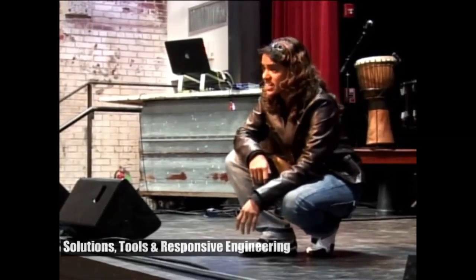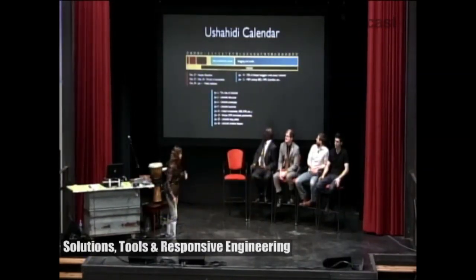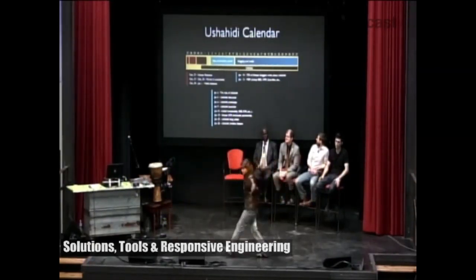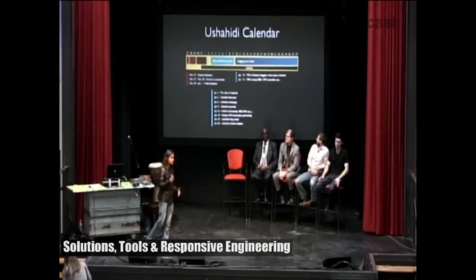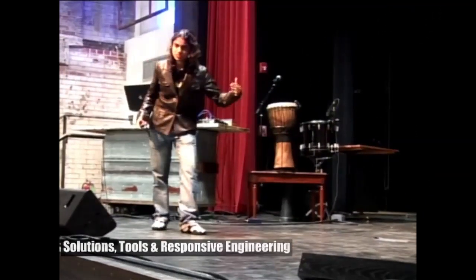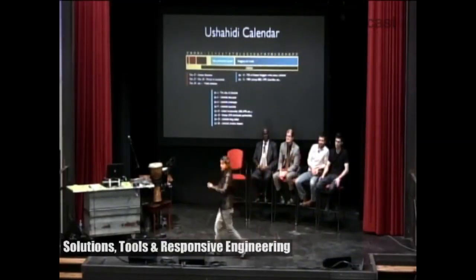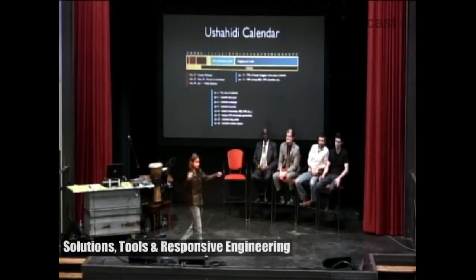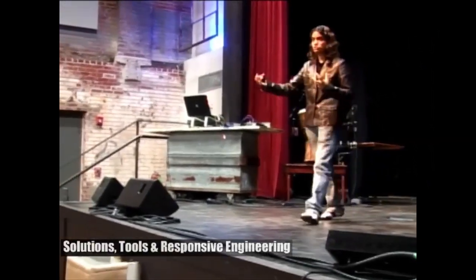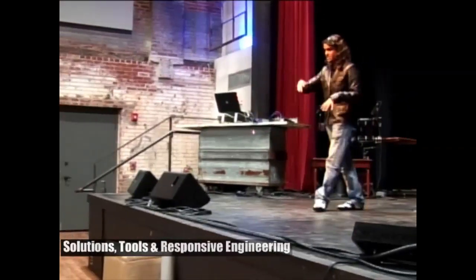What you see is actually the Ushahidi calendar — the timeline of what happened. Right there: post-election violence. Between December 30th to January 1st, there was a media blackout. We needed a solution, tools, responsive engineering. The idea of Ushahidi through the co-founders was discussed and prototyped. A call was sent out globally, calling all volunteer developers and designers: we need your help, Kenya needs you. We need you to develop a core technology which is open source to help Kenya reach out to the global world.